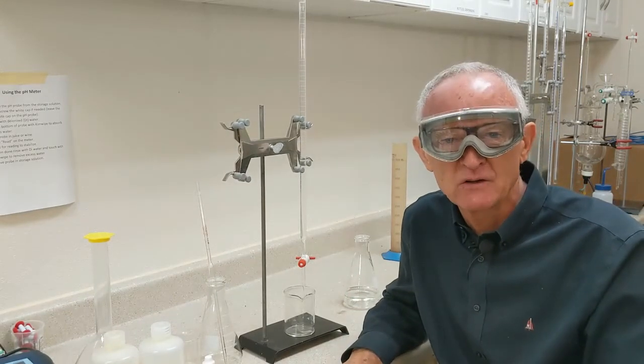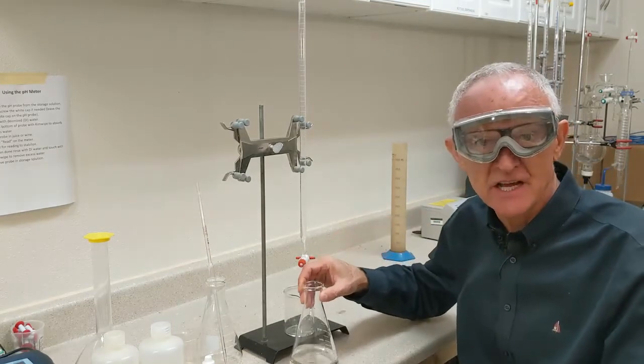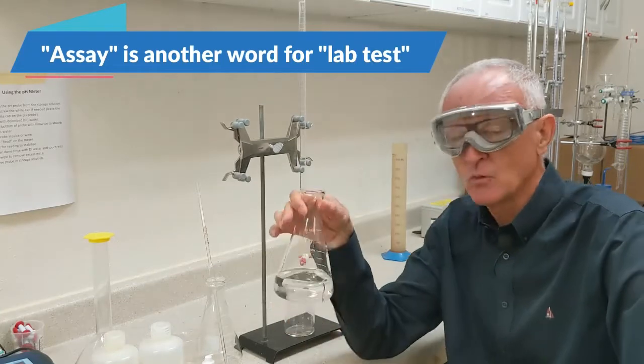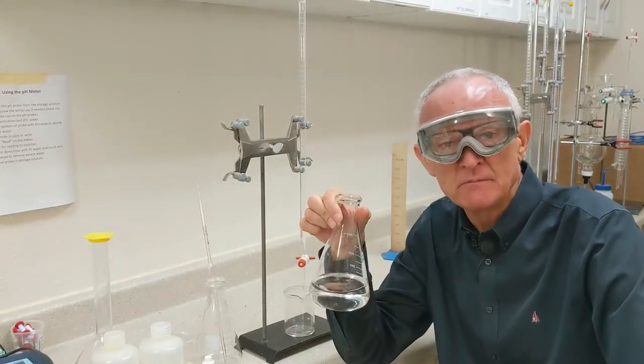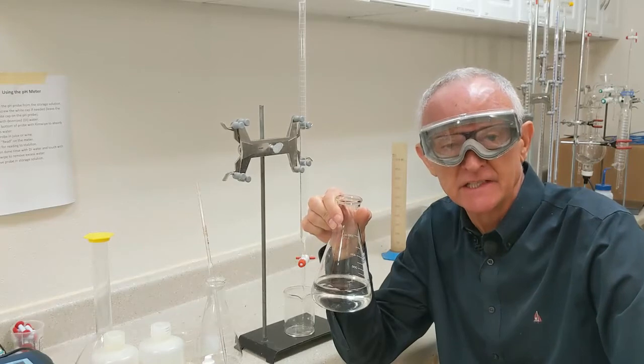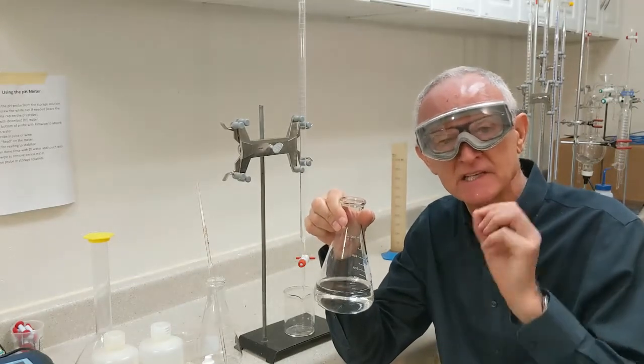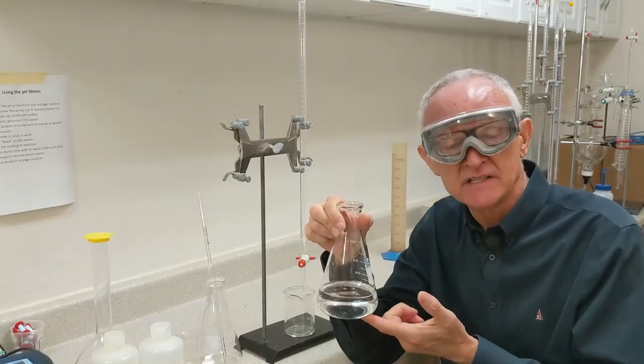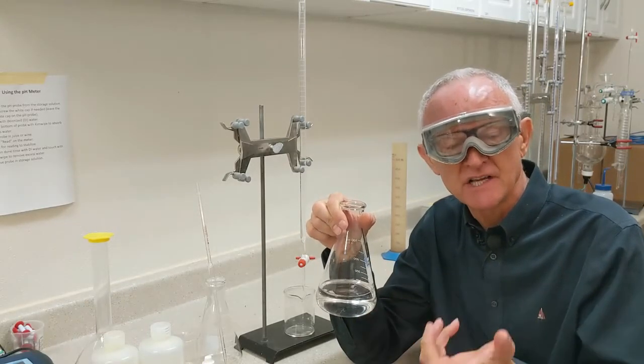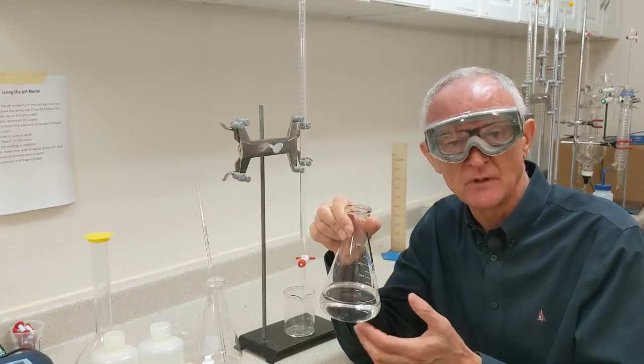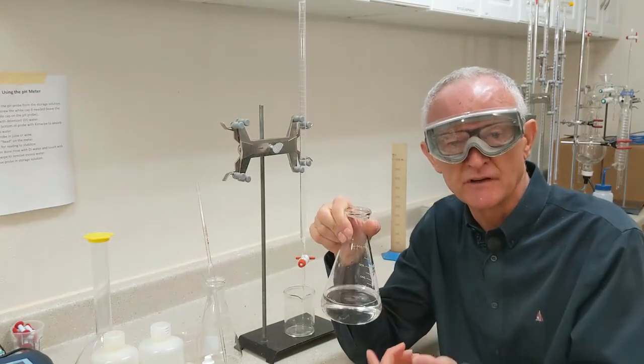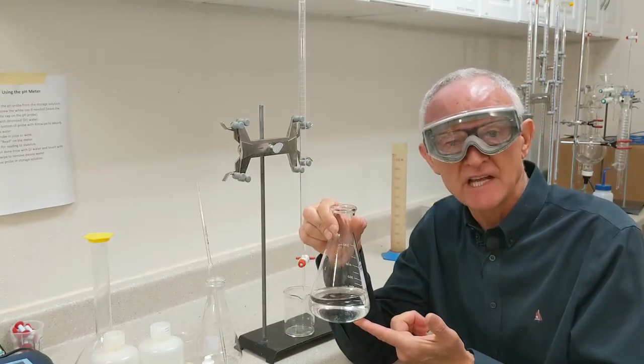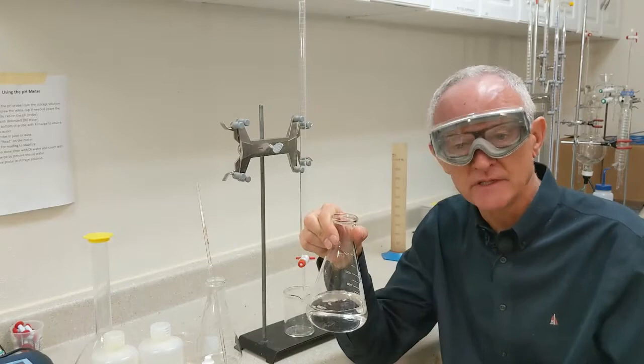Now before I add wine to my flask to actually do the assay, we have a problem. We put water in here, that water might have some acid in it. In other words, it might not be neutral, it might be slightly acidic. And so we need to get rid of any acidity in here before we add our wine to test the acid in our wine. We don't want acid from the water interfering with the test of acid in the wine. So I'm going to neutralize any acid in here by adding a little bit of sodium hydroxide.